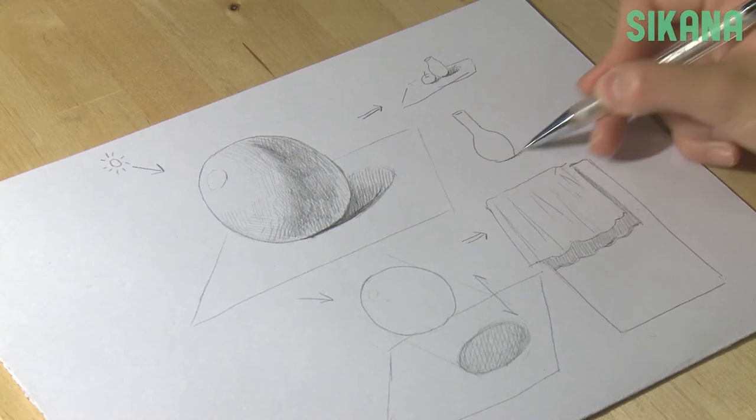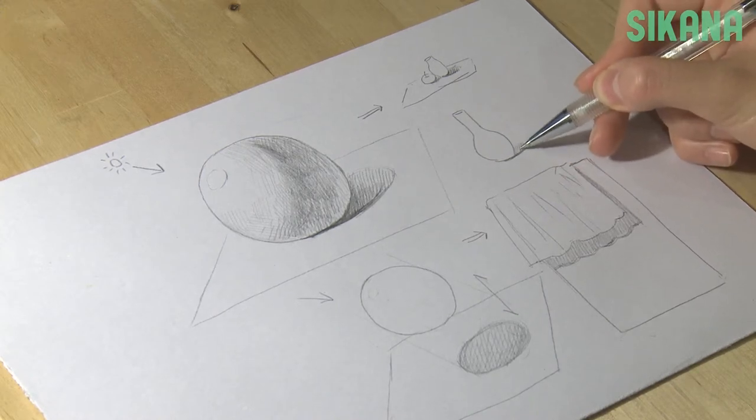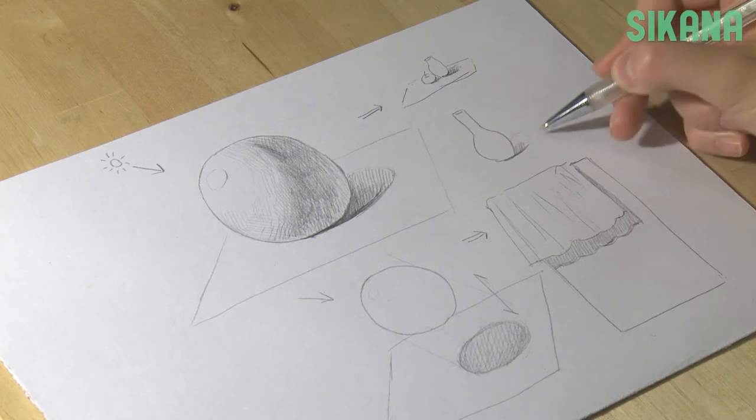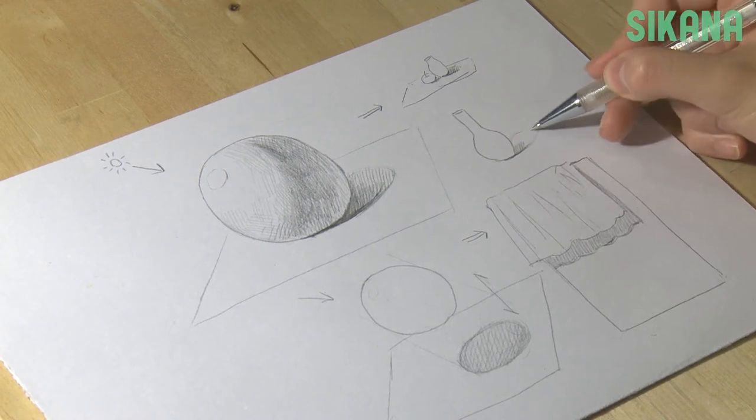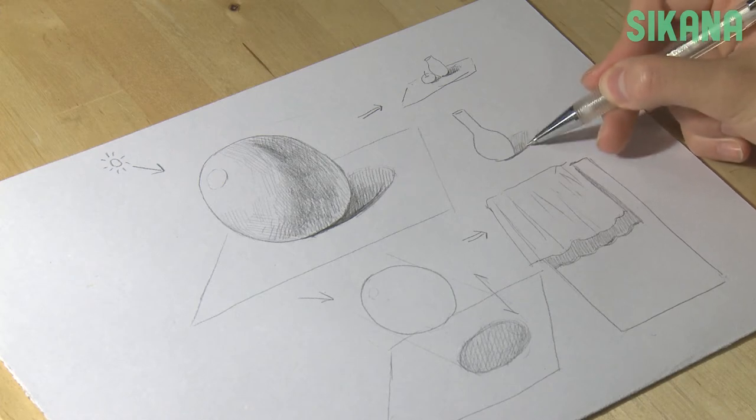Also, consider the source of the light. If the light source is close to the object, the shadow will be more sharp. If the light source is further away, the shadow will be more diffused.